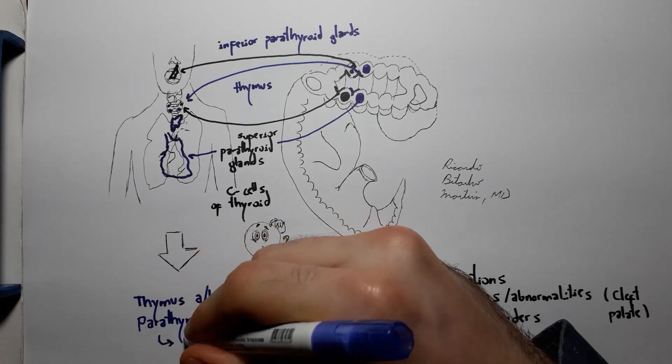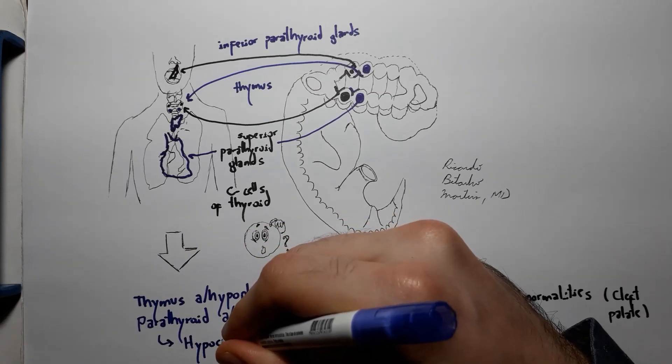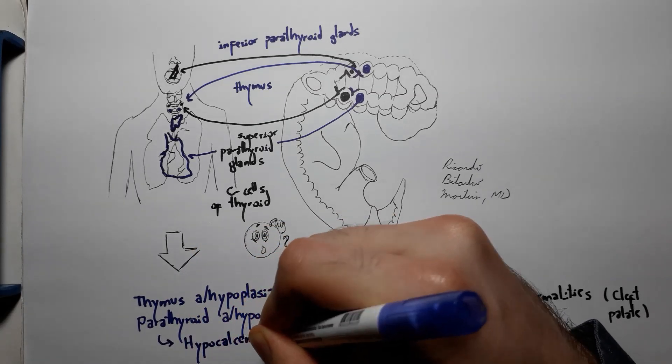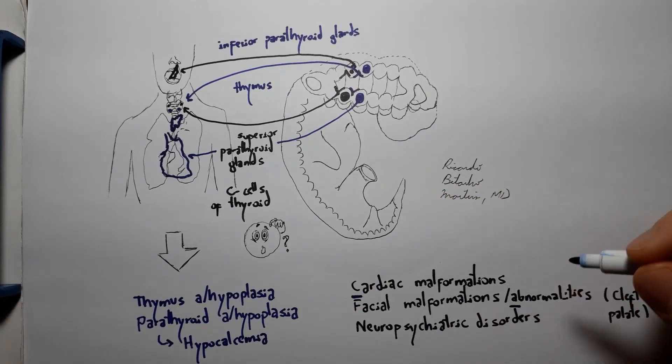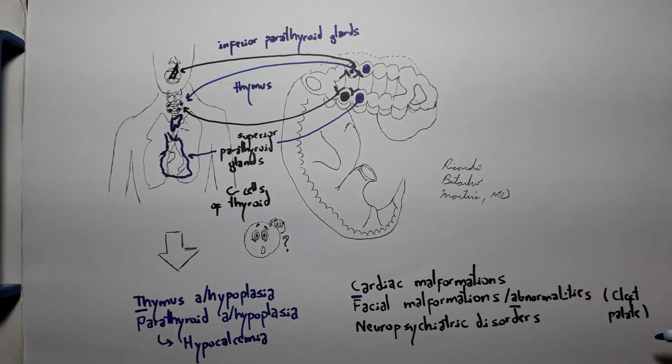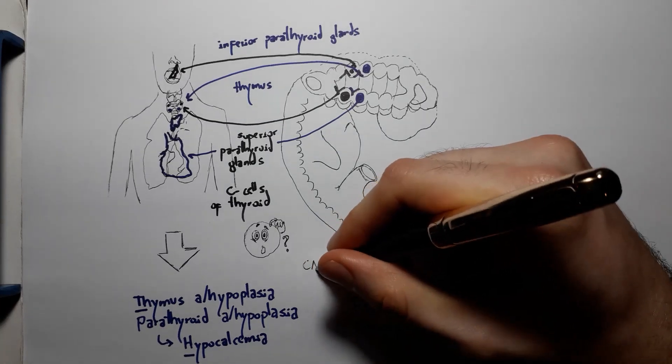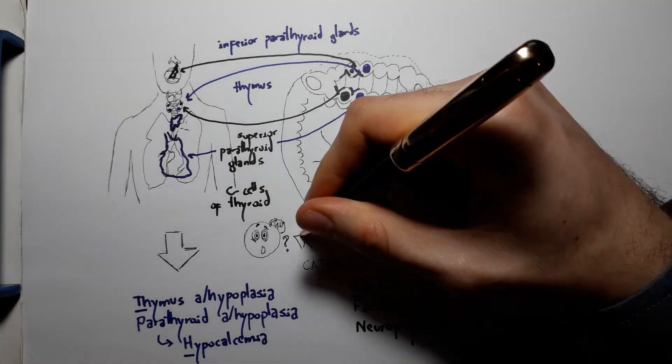Personally, I had never heard of CATCH-22. However, if it has a meaning for you, feel free to use the mnemonic. Personally, I prefer just to think that as a malformation of the third and fourth pharyngeal pouches, we will have defects in all the derivative structures from these two pharyngeal pouches.